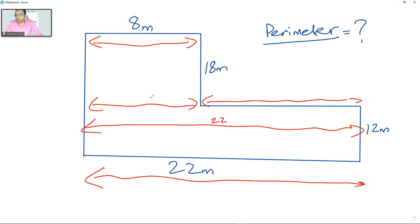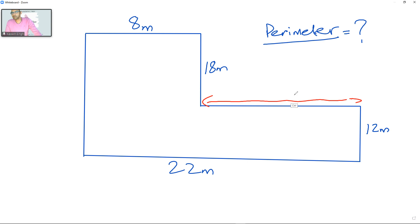That means this is 22, this is 8, so what will that be? 22 minus 8, right, which is 14. Can you see that? So this length here will be 14 meters and we need it for the perimeter.